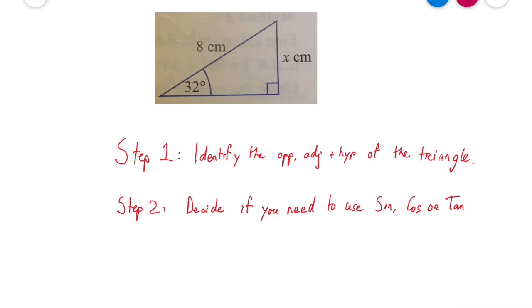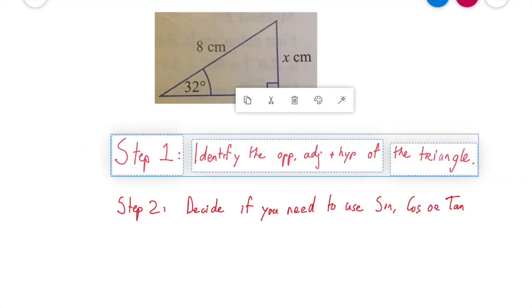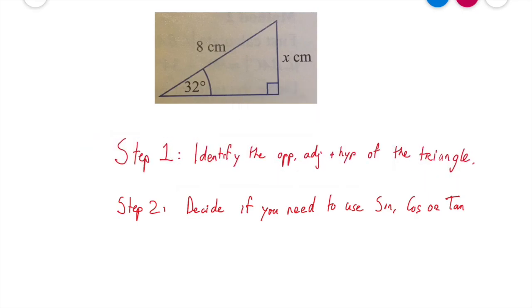So the first step we have to do in these questions is you always find out what the opposite, adjacent, and hypotenuse of the triangle are. That's what I've said here in step one: identify the opposite, adjacent, and hypotenuse of the triangle.